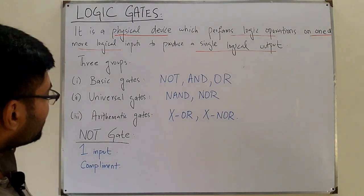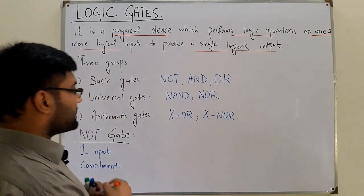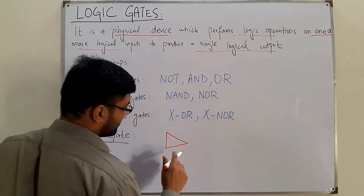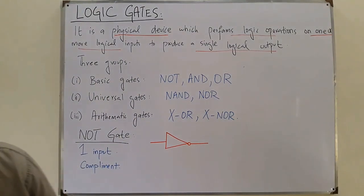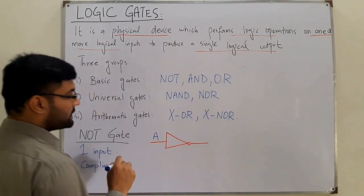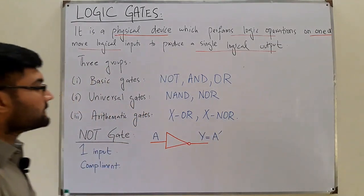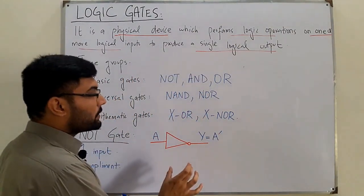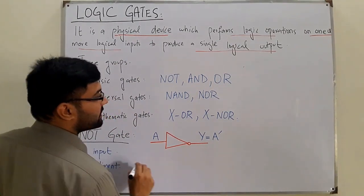If the input is zero, the output would be one; and if the input is one, the output would be zero. The symbol for the NOT gate is a triangle with a bubble placed at the output. If the input is A and the output is given by function Y, then Y equals the complement of A. A truth table is a table containing outputs for each and every combination of inputs.